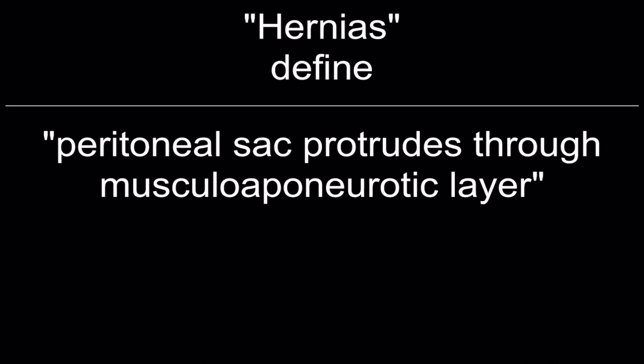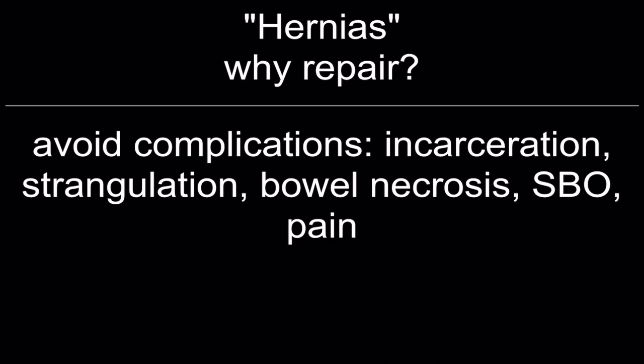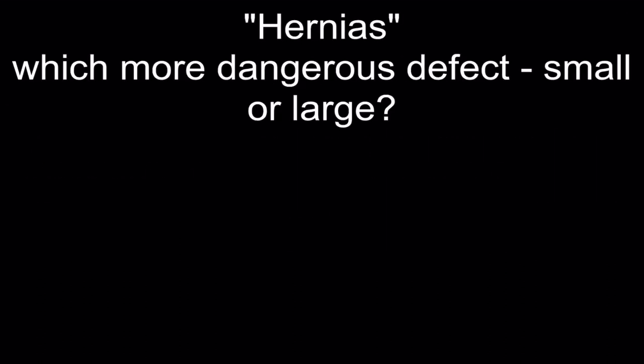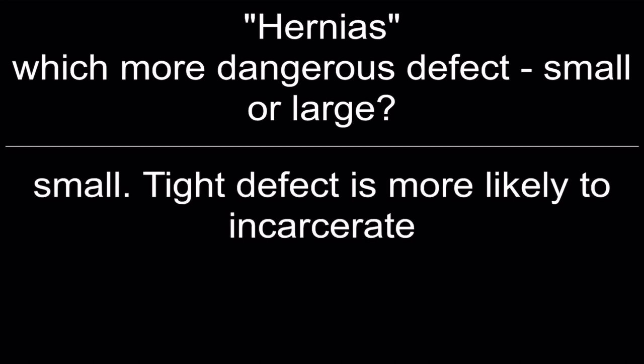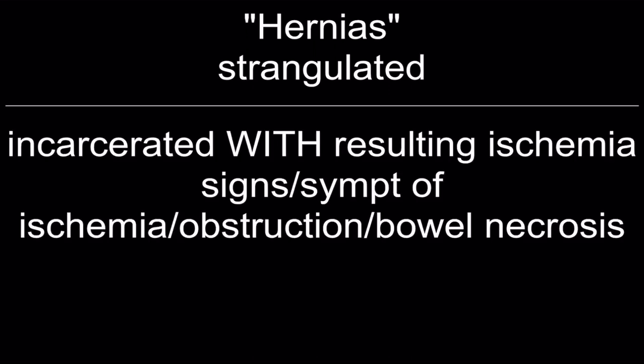A hernia is defined as a peritoneal sac that protrudes through the musculoaponeurotic layer. You should repair hernias to avoid complications such as incarceration, strangulation, bowel necrosis, small bowel obstruction, and pain. A small hernia is more dangerous because a tight defect is more likely to incarcerate. Incarcerated hernia: swollen and fixed within the hernia sac, may lead to obstruction. Strangulated hernia: incarcerated with resulting ischemia, obstruction, and bowel necrosis.